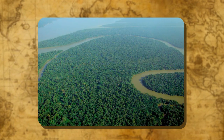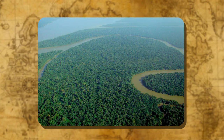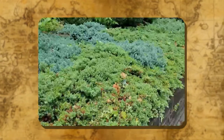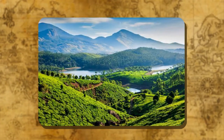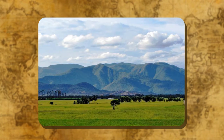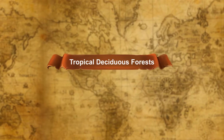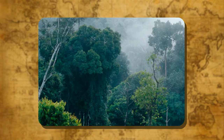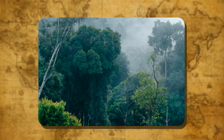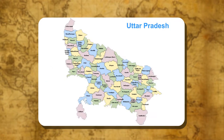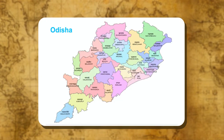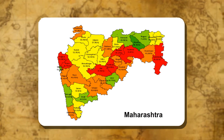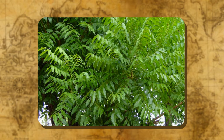Tropical rainforests are found in areas which receive heavy rainfall — more than 200 cm annually. Many other types of plants like bushes, creepers and shrubs are also found in these forests. In India, these forests are found in the northeastern hills, the Western Ghats and the Andaman and Nicobar Islands. Tropical deciduous forests: These forests are widespread in India, also called monsoon forests. They are found in areas where the annual average rainfall is between 100 and 200 cm. Madhya Pradesh, Uttar Pradesh, Bihar, Jharkhand, Chhattisgarh, Odisha and some parts of Maharashtra are the home of deciduous forests. Important trees such as shisham, sal, teak, peepal and neem are found in these forests.